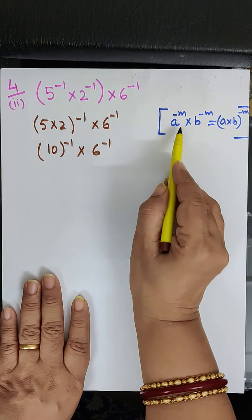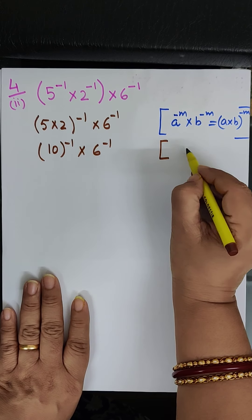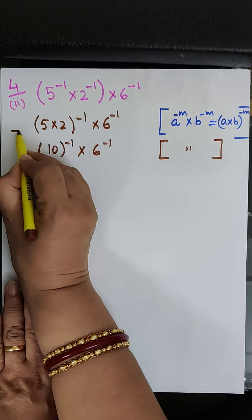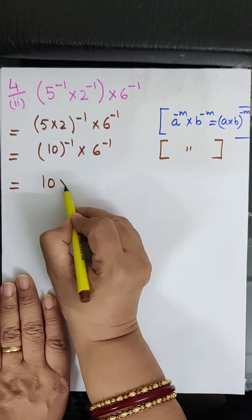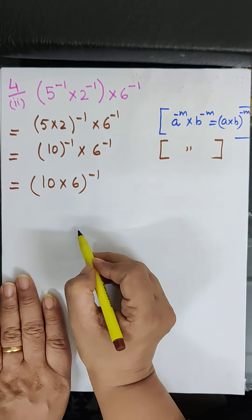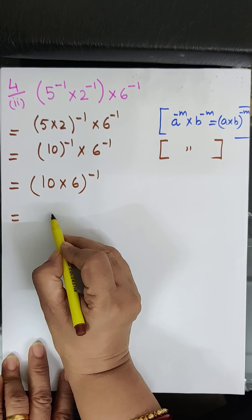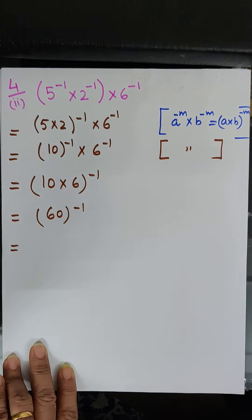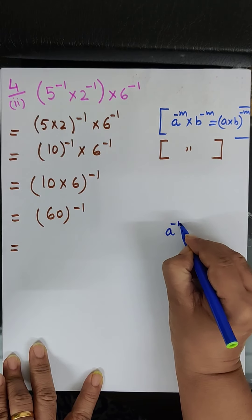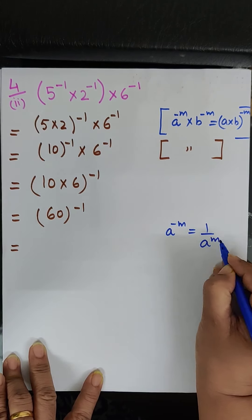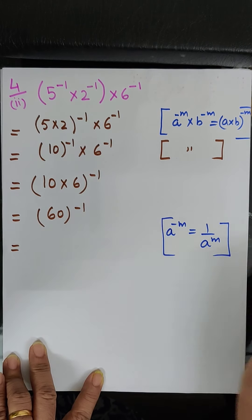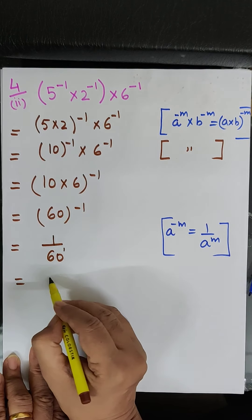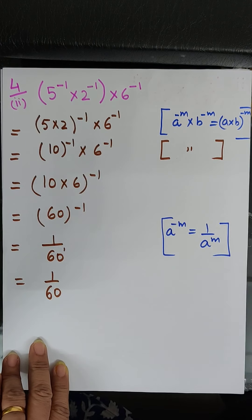Again, bases are different and powers are the same, so we use the same law again. We can write this as 10 into 6, raised to the power minus 1. Now 10 into 6 is 60, raised to the power minus 1. We use the law: a to the power minus m equals 1 upon a to the power m. So this equals 1 upon 60 raised to the power 1, which equals 1 upon 60. Is this clear?